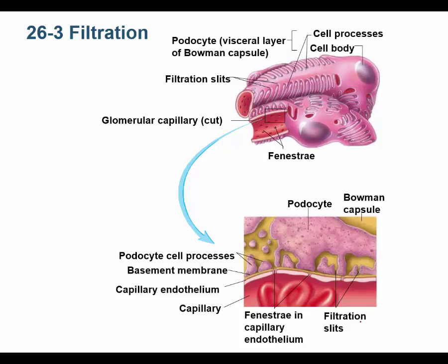We already covered a little bit about filtration before. What it is: there's blood pressure in the blood, and that blood pressure is pushing solutes out into the glomerular space or the Bowman's capsular space. The glomerulus is a capillary bed inside Bowman's capsule, and the blood pressure is pushing water and solutes into the Bowman's capsular space.